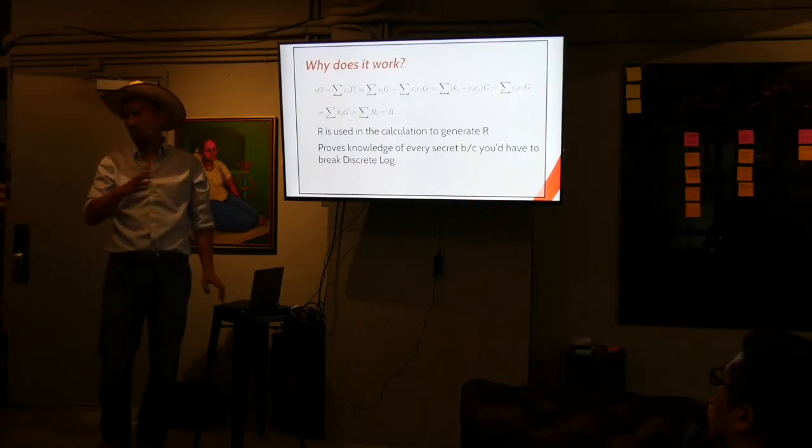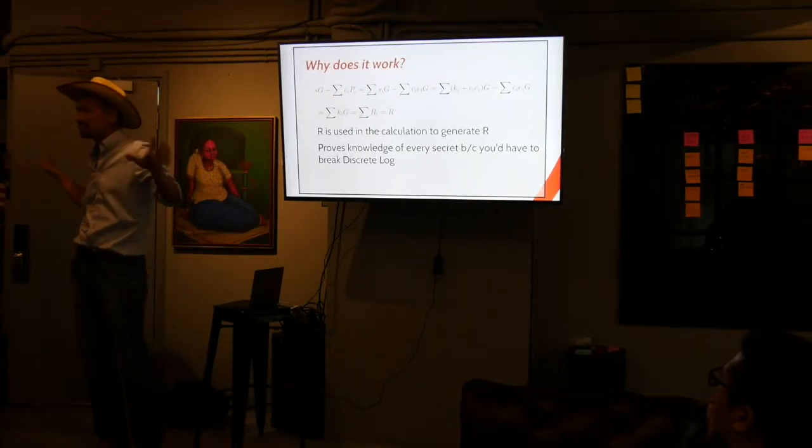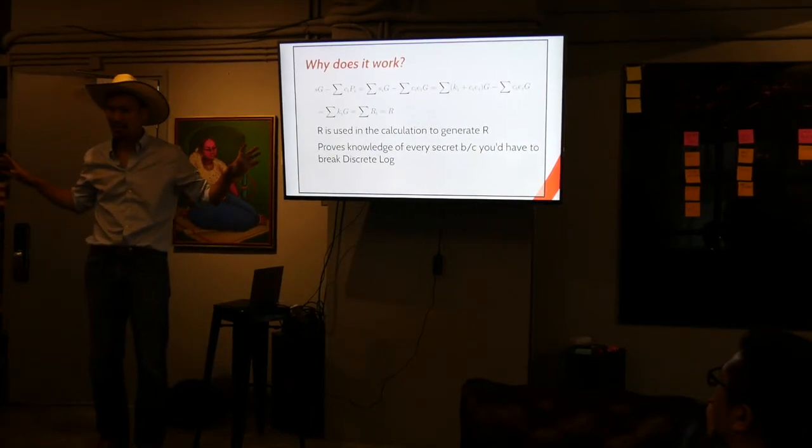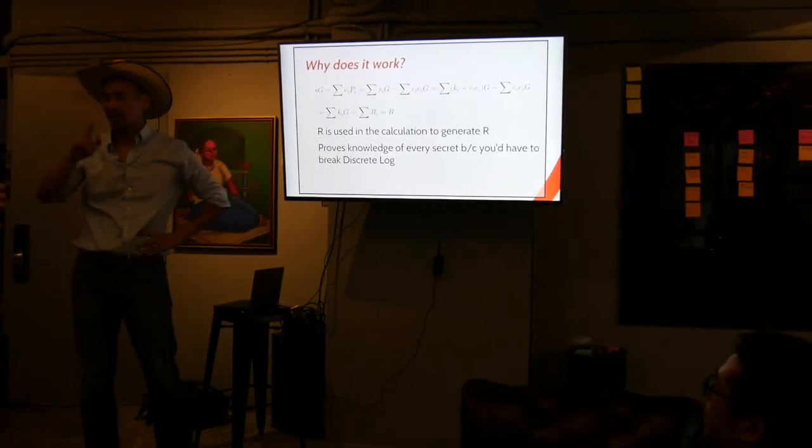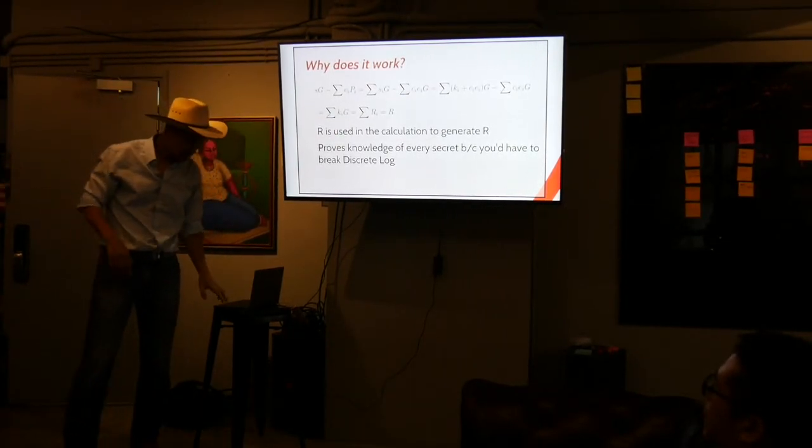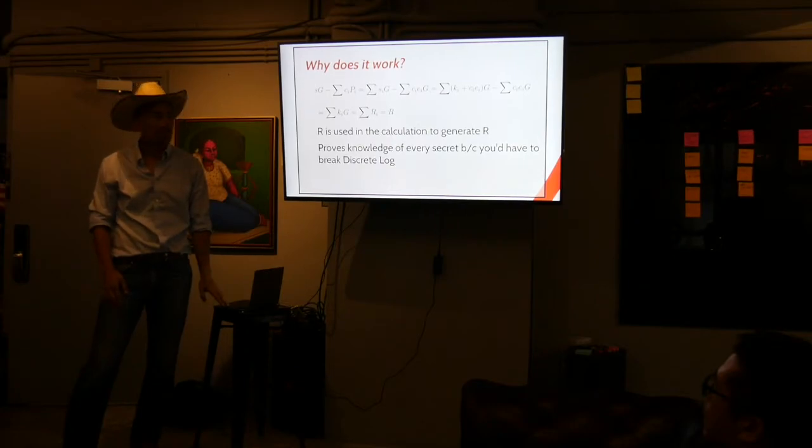And it proves the knowledge of every single secret. Not just one of them but everything, everyone that participated as part of the pub key. Or every pub key that was a part of the signature. Yeah. So any questions about this? Is it the actual coordinate, not just the x values? Yeah. It's the public point. Yeah. So x comma y. Yeah. All right.